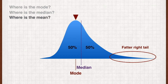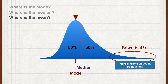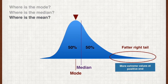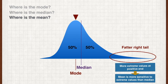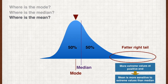Finally, with respect to the mode and the median, where do you think the mean is? Refer to the fatter right tail — this indicates there are more outliers or extreme values on the positive side. Remember that the advantage of the median over the mean is that the median is less sensitive to outlier values. Knowing that the mean is more sensitive to outliers, the mean has to be higher than the median — therefore the mean is to the right of the median.